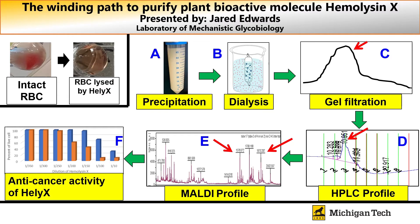We then take those samples and run them on high performance liquid chromatography — that's in block D. What we're seeing when we run that is a nice, well-defined singular peak. We're then able to test those fractions for activity, and we're seeing hemolytic activity arising from those samples as well.